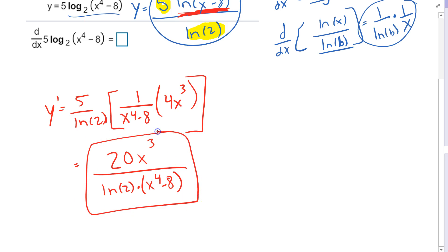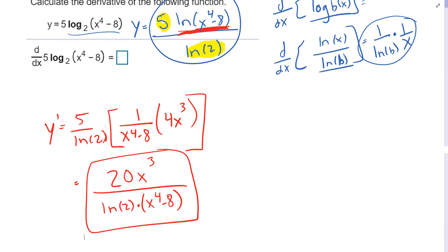And that is going to be my derivative of this log base 2 function. Really, you could also just pull it out to know that you're going to have 1 over this ln of b, being b is the base, and then treat it like a natural log.